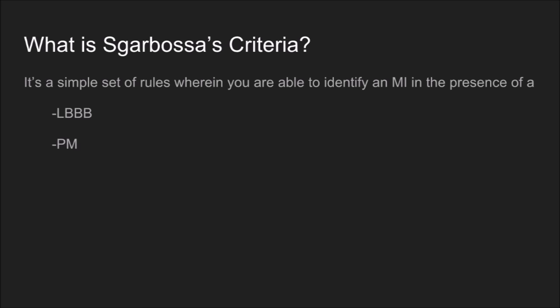What is Sgarbossa's criteria? It's a simple set of rules — three findings you can detect in the presence of a left bundle branch block or a paced rhythm which will allow you to identify a transmural MI, or what is usually called a STEMI. It just can't be called a STEMI when it's in the presence of one of these wide complex rhythms, which is why I like to refer to things as a transmural MI. If you don't know what a transmural MI is, take a second and watch the transmural MI video.